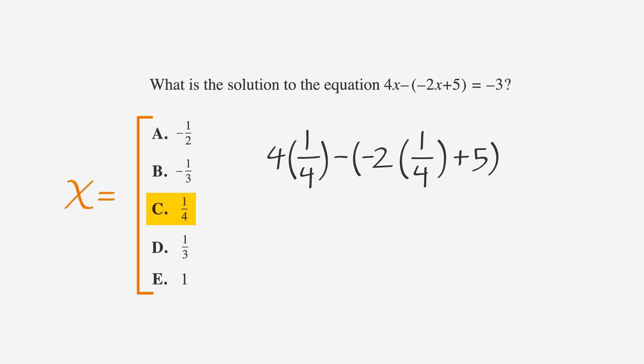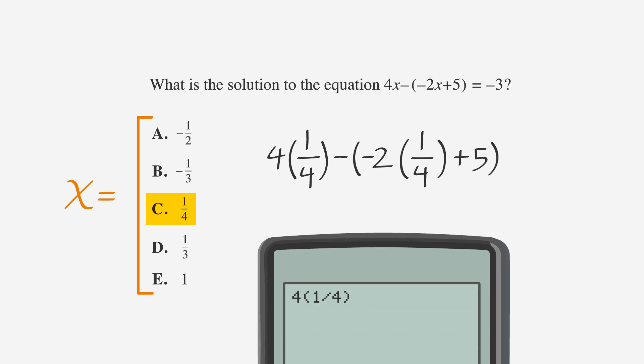After we've written it out, let's plug it into our calculator. Type in 4 times 1 fourth, minus the sum of negative 2 times 1 fourth, plus 5. Hit enter, and we get negative 3.5.